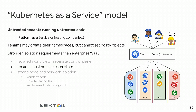The last model is Kubernetes-as-a-service, also called containers-as-a-service. You're running a hosting company accepting containers from everyone. Tenants have different namespaces but don't see each other at all, so you have stronger isolation requirements than in the enterprise or SaaS models. Isolation of workloads can be achieved with Kubernetes RBAC, and network isolation requires sandbox pods and multi-tenant networking to prevent snooping.